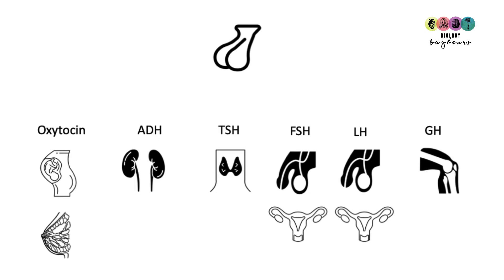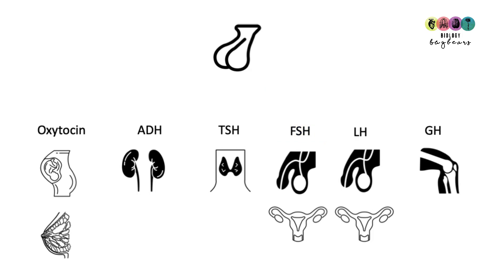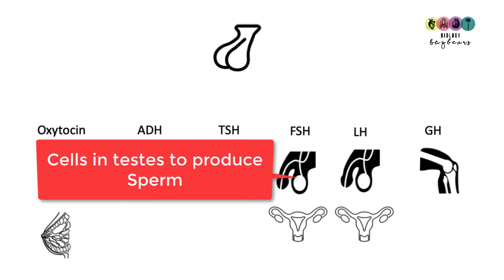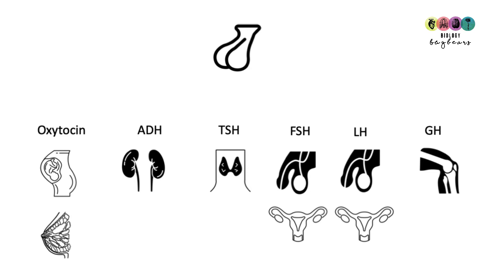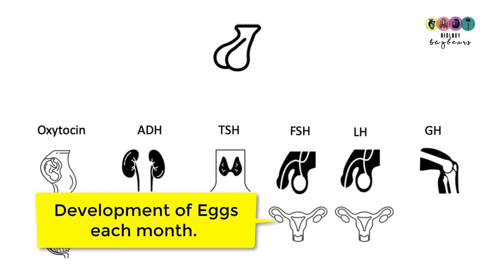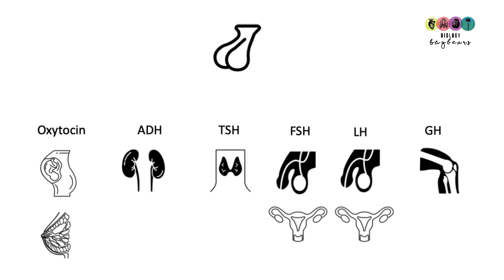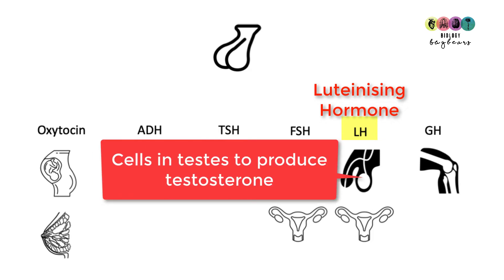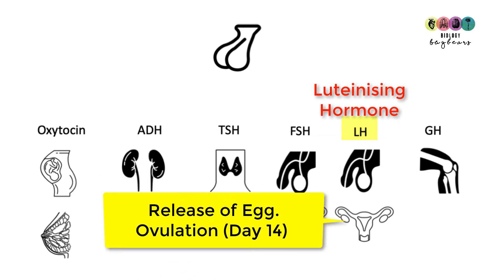The next hormone produced by the pituitary gland is follicle stimulating hormone, produced in both males and females. In males, it travels in the blood to the testes where it stimulates cells to produce sperm. In females, it travels to the ovaries where it stimulates the development of eggs each month. Next is luteinizing hormone, also produced in males and females. In males, it travels to the testes to stimulate cells to produce testosterone. In females, a surge in luteinizing hormone causes ovulation.